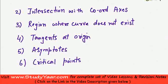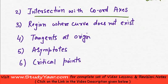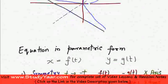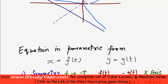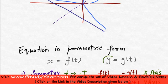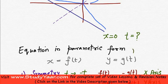Now to find intersection with coordinate axes, what you can do is you can put x is equal to 0, get a corresponding value of t, put that value of t over here and get the corresponding value of y. So x is equal to 0, get t, put it over here, get y.